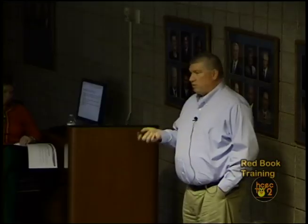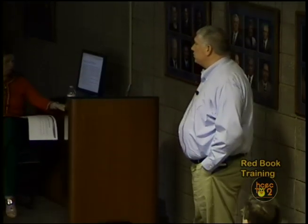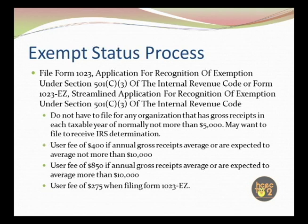Most people complete the SS-4 online now because you can get the IRS letter in PDF form right away. After that, the next step is to file either Form 1023, which is the recognition of exempt status, or the Form 1023-EZ, which is a streamlined application. Section 501(c)(3) of the Internal Revenue Code governs public charities — that's the section you would fall under.